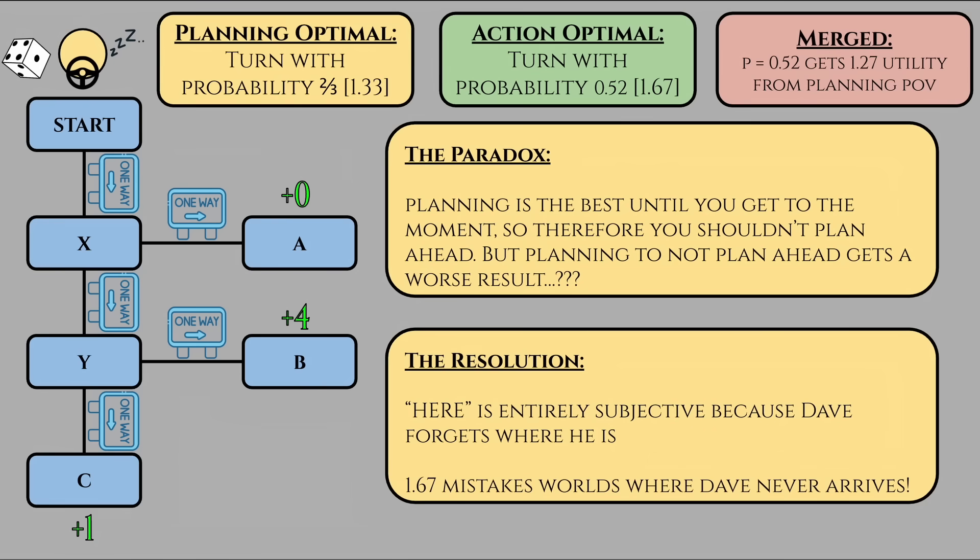The 1.67 value arises because Dave would be saying conditional on the event that I am at the intersection, there's a 1 over 1 plus P chance that it's X and P over 1 plus P chance that it's Y. This entire concept is invalid because it presupposes the idea that a Bayesian update about which place Dave might be at among multiple identical places is possible. Remember, the rules explicitly state that Dave has no recollection of whether he's passed an intersection or not, and cannot tell the difference between X and Y.